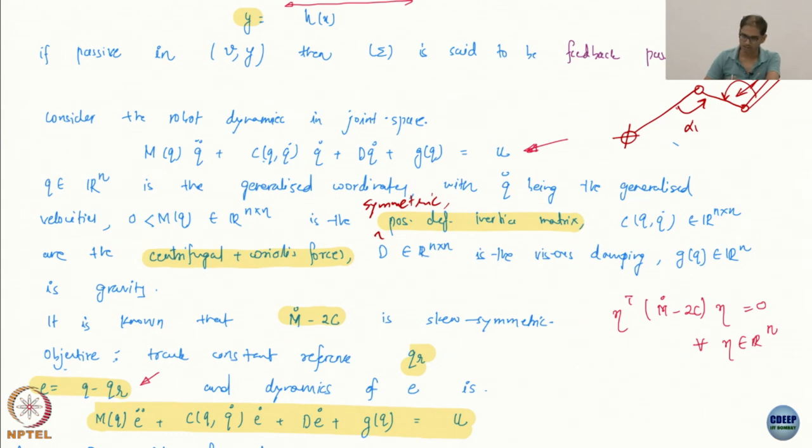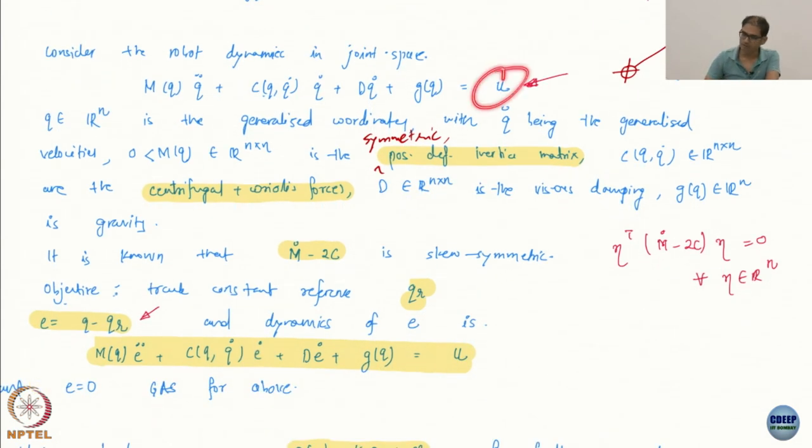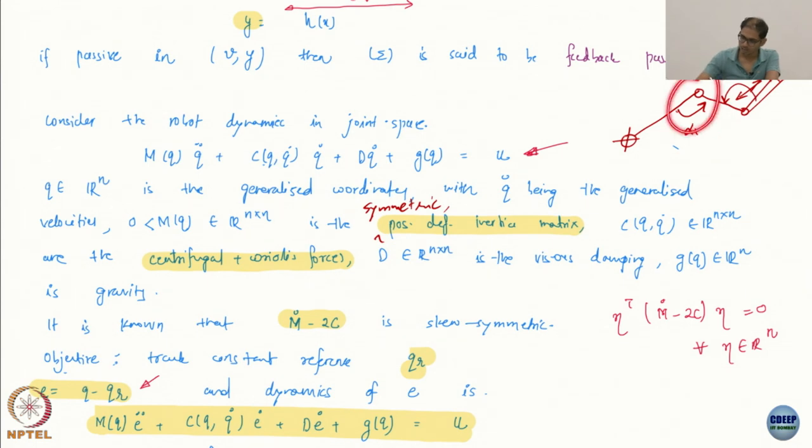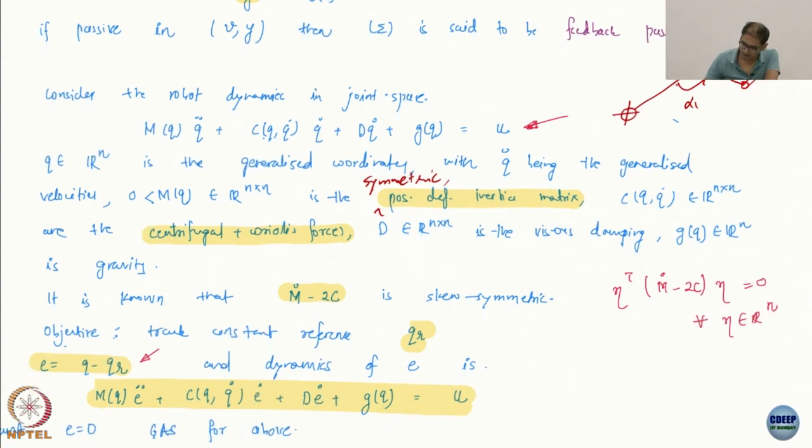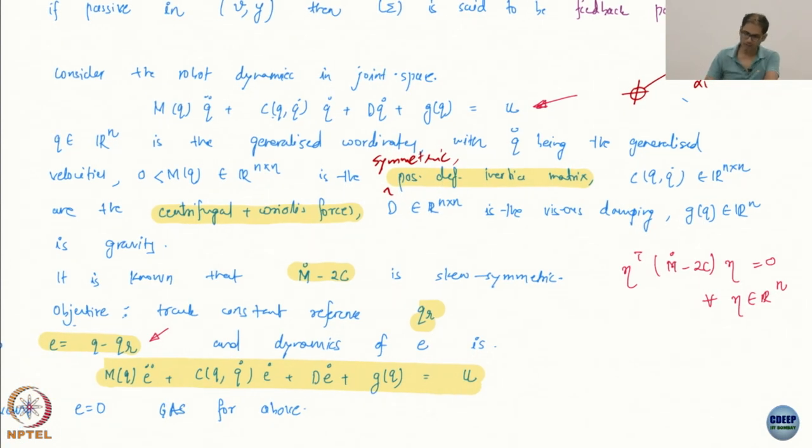And then you have the C, Q, Q dot, which are the centrifugal and Coriolis forces. And then there is D, which is the viscous damping. This is like if you have these joints and then there is damping on the joints. Then there is some viscous damping and that sort of always scales the velocity. And then finally you have the G, which is the gravity term. So this is standard notation. And then you have the control finally.